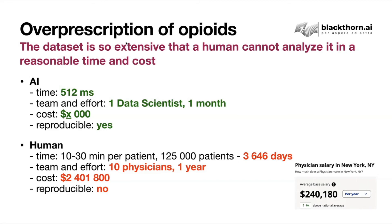On the contrary, a human physician on average takes from 10 to 30 minutes to review the history of one patient. So for 125,000 patients, it would take one physician 3,600 calendar days to do the same analysis we did in one month. If we take 10 physicians, they will work an entire year to do the same analysis — and it will not be reproducible. Whenever new data comes in or you decide to redo it, you have to start from scratch, meaning another year. If we recalculate this for 10 physicians and multiply by the average physician salary in New York, it will cost 2,400,000 US dollars.